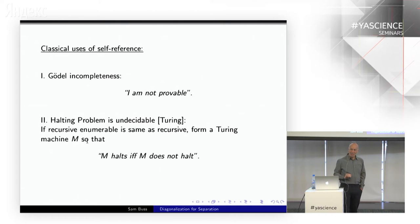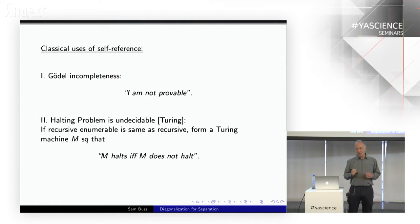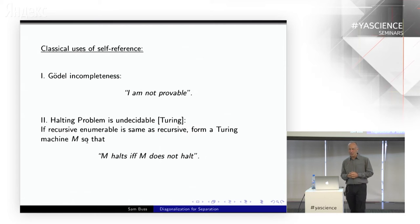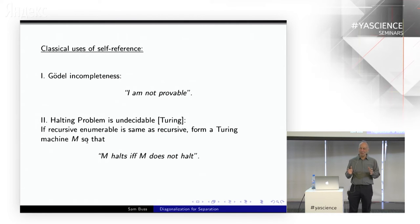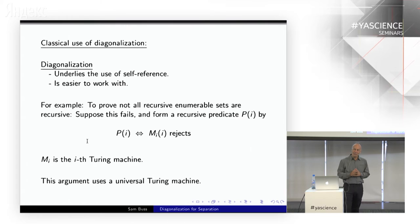Before the more technical parts, what is our wish? How would we like to separate P versus NP? We'd like to separate it the way recursive was separated from recursively enumerable. There were classical uses due to Gödel and Turing. Gödel's incompleteness theorem was proved using a formula that says 'I am not provable.' The halting problem's undecidability can be phrased similarly — you form a Turing machine M that says 'I halt if and only if I do not halt.' These self-reference approaches don't seem to work in complexity theory, but diagonalization underlies them and can still be made useful.